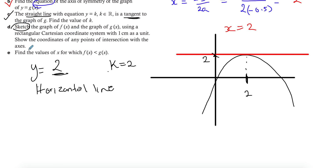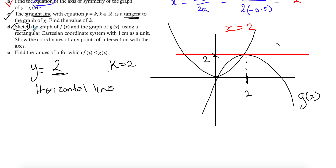Part d asks you to sketch the graph using rectangular Cartesian coordinates with one centimeter as the unit. You need to graph both g(x) and f(x), and show the points of intersection. Because it specifies one centimeter as the unit, you need to be at least somewhat accurate — not just a rough sketch. Try to keep it as accurate as possible and clearly show the coordinates of any points of intersection.